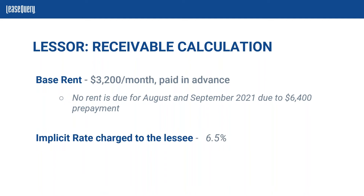For the city, we're first taking a look at the lease term and the payments. The lease term is 11 months — July through May 31st — and the city is going to be receiving nine payments over that 11-month period. Factoring in the lease payments, with rent due for August and September as a $6,400 prepayment, we now need to factor in the implicit rate to establish the present value of the payments. We've walked through extensively how to determine the rate, and for the lessor we're going to be applying the implicit rate of 6.5%.